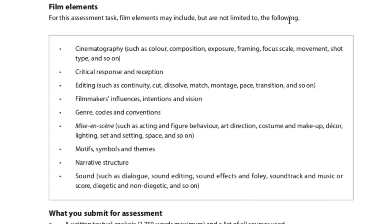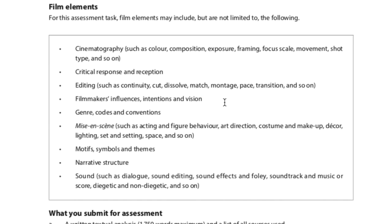Film elements are where our film language comes in. These may include but are not limited to: cinematography such as color, composition, exposure, framing, focus, scale, movement, and shot type; critical response — what critics thought and how it was received by audiences; editing such as continuity, cut, dissolve, match cut, montage, pace, and transition. Filmmaker influences, intentions, and vision tie back to the director/producer/writer breakdown you did earlier.